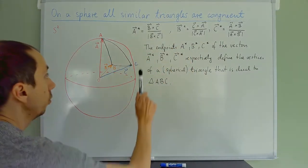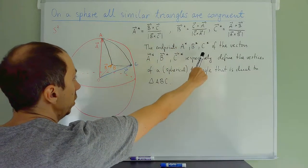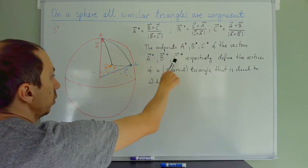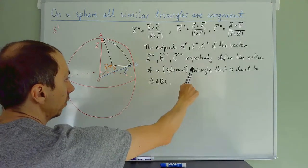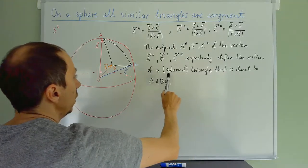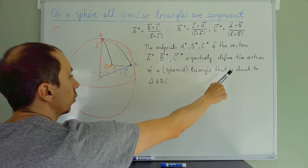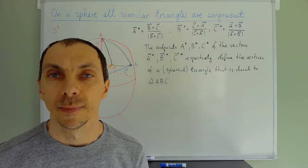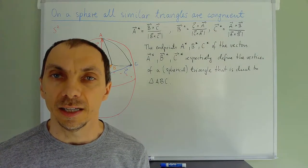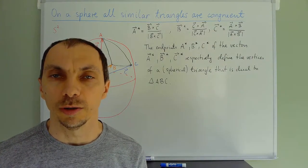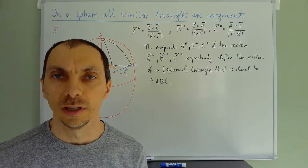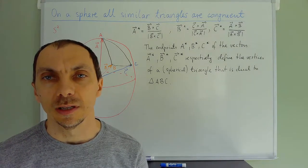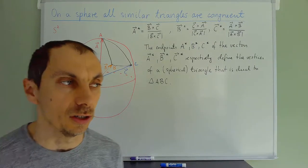So the endpoints A*, B*, C* of the unit vectors A*, B*, C* respectively define the vertices of a spherical triangle called the dual triangle to triangle ABC. It doesn't really matter for us how the dual triangle looks — it's only a tool. But since we have it here, let's try to look at where some of the vertices should lie.